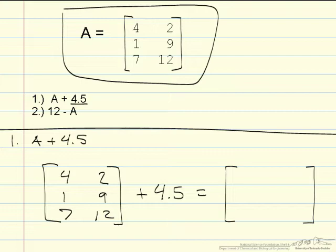This is your matrix A and you want to add the number 4.5 to every single element in matrix A. Simply put, 4 and 4.5 is 8.5 and there is 6.5, one element at a time.